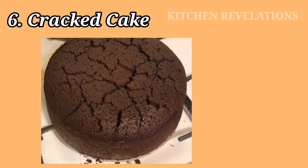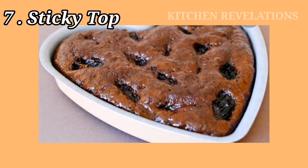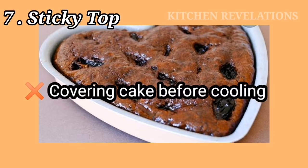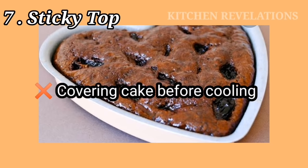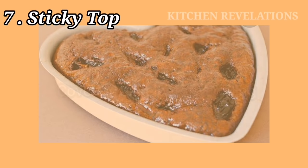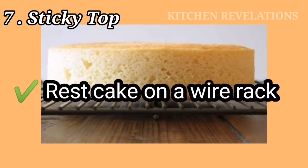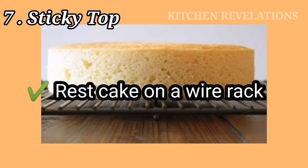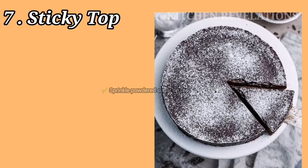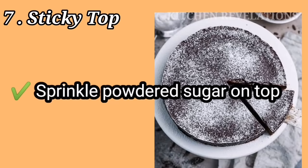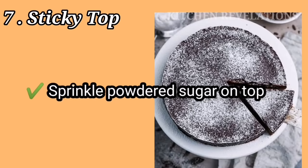The next problem is a sticky top portion. This is caused by covering or wrapping the cake before it has completely cooled, which traps moisture inside and causes a sticky texture. To avoid this, allow the cake to sit on a wire rack until it cools down completely. You can also sprinkle some powdered sugar on top to help absorb some of the moisture if the top is sticky.